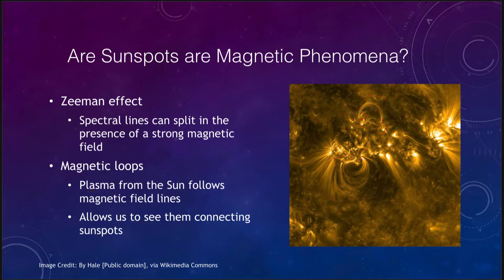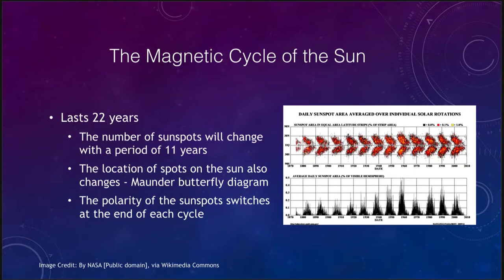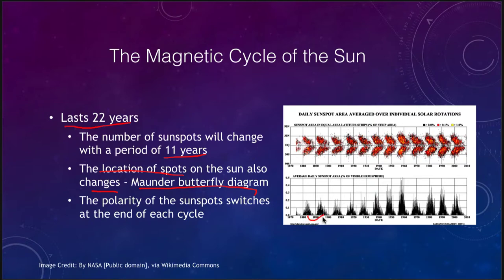Let's look at the pattern of the magnetic cycle. The magnetic cycle is 22 years, although the number of sunspots changes with a period of 11 years. Other things change too — not only does the count of sunspots come and go with that period, but the location of the spots on the Sun also changes. This is seen in what we call the Maunder butterfly diagram, and down below we can see the sunspot count changing with an average period of about 11 years.